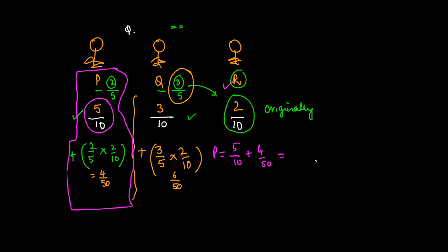50 is the LCM of 10 and 50. 50 divided by 10 gives you 5 times 5, gives you 25 plus 4, 29 by 50. So the new ratio of P, or the new share of P, is going to be 29 by 50. Let's do this for Q as well.